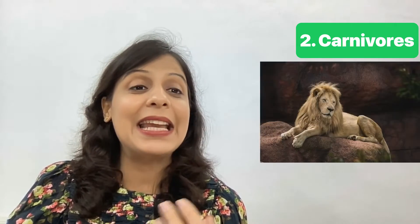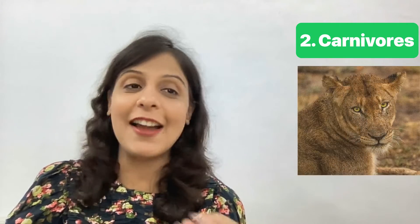The second category is Carnivores. These are animals that eat other species — for example, lion and tiger. The third category is Omnivores. Omnivores are those that eat plants and also consume animals. They eat food from plants and also eat meat. Like a dog or a bear — they are omnivores.